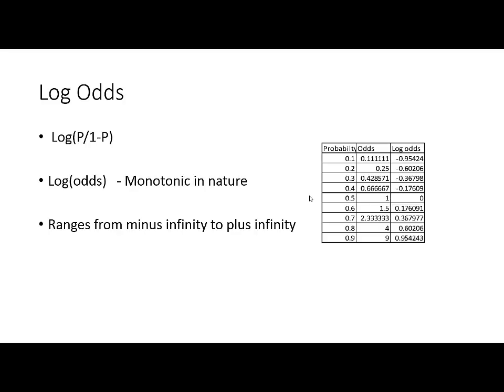Bounded variables are not very suitable for modeling, especially when the variable is a dependent variable. Hence, we take the logarithmic transformation of the odds and then model. This serves two purposes: log odds is not bounded — it ranges from minus infinity to plus infinity — and it's a very simple transformation that can be explained easily. These are the two reasons why we model log odds instead of the actual probability in logistic regression.